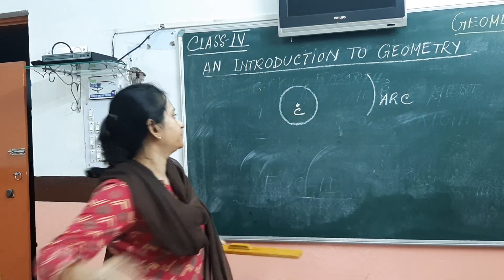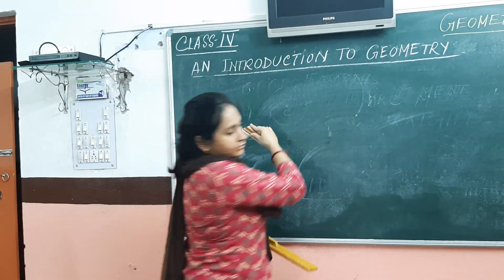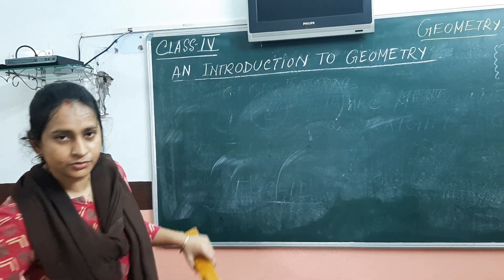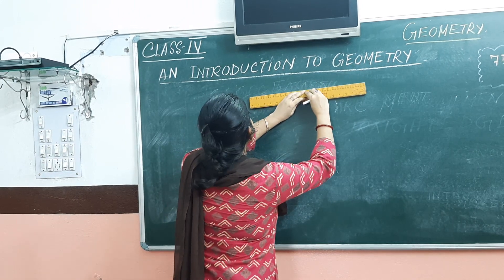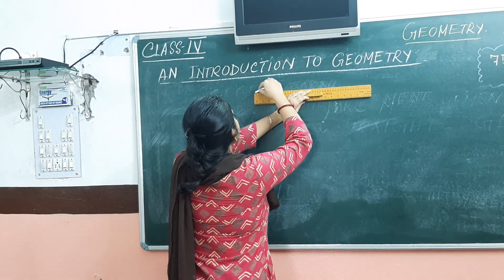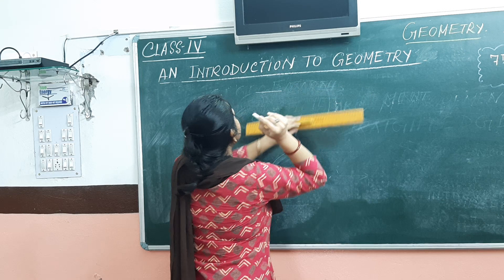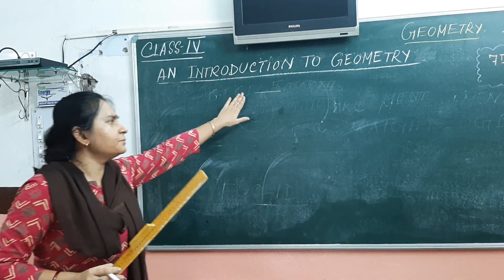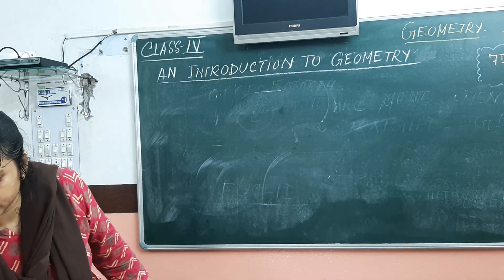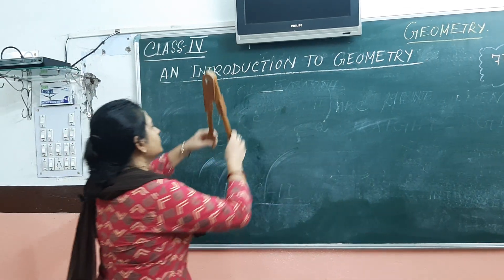I will show you. Suppose we are drawing a line here. We draw any line. Okay, we don't know what is the measurement of this line. Now we put this divider